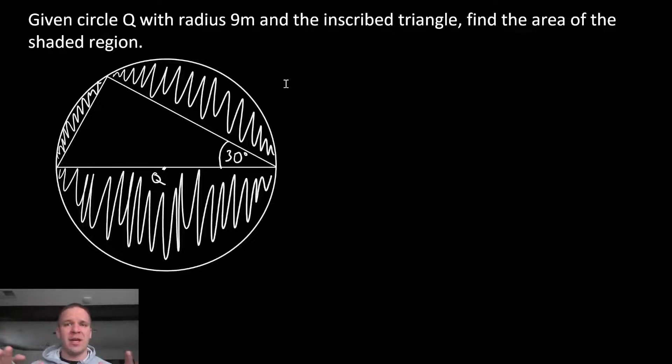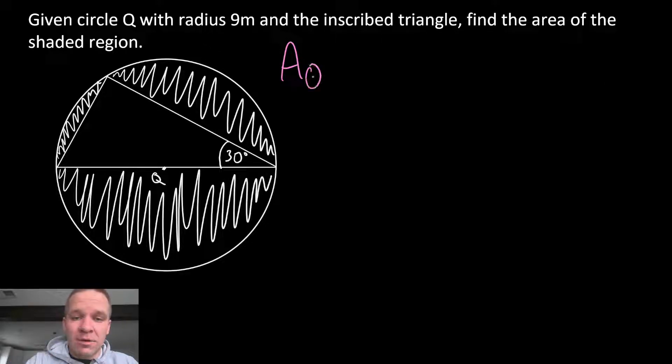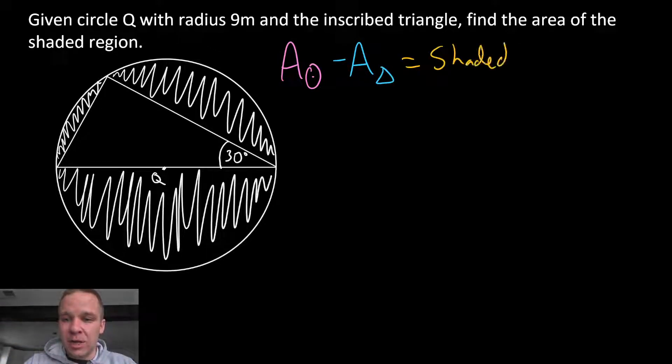Alright, let's talk big picture of this whole thing here. When we're talking about shaded region problems, we're gonna take the larger shape and subtract out the smaller ones. In this case, the area of the circle minus the area of that triangle is gonna give me my shaded area. So that's my overall goal.